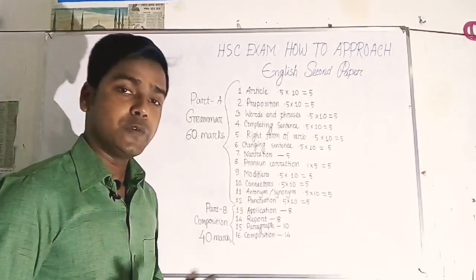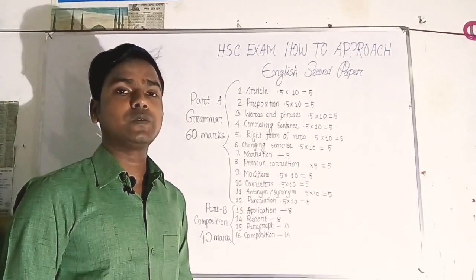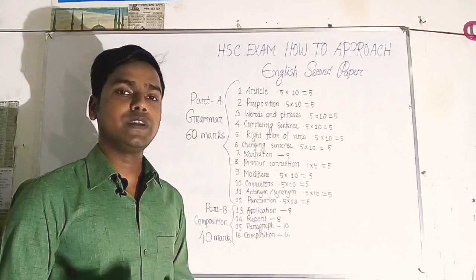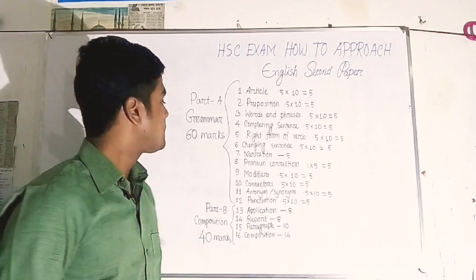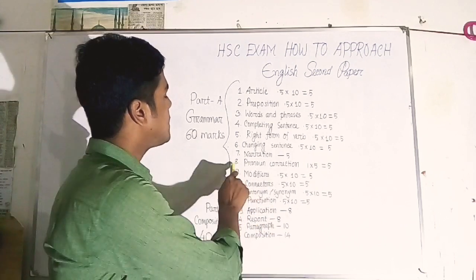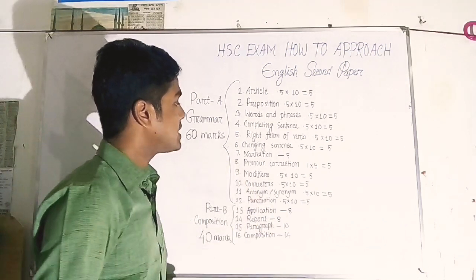Number 7 is Narration — direct to indirect speech. Converting direct speech to indirect is a pass mark topic, meaning students must practice this well to secure marks.